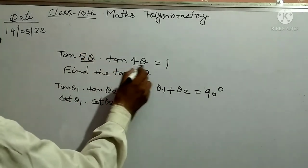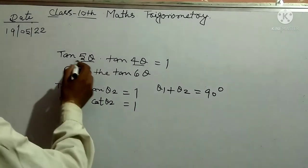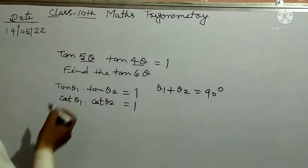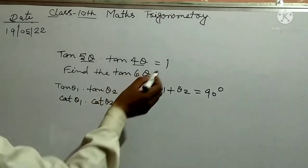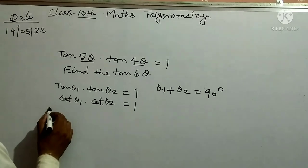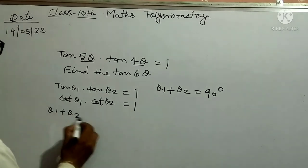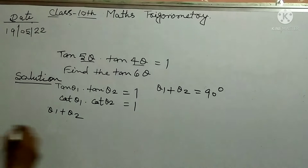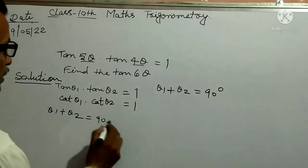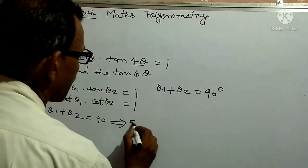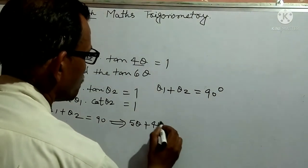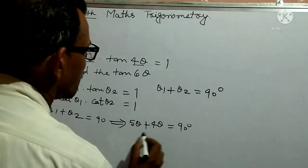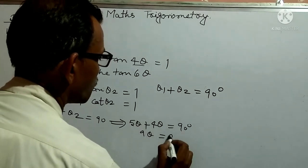So here, 5θ is θ₁ and 4θ is θ₂. Using this method to solve the question: θ₁ + θ₂ = 90 degrees, so 5θ + 4θ = 90 degrees, which gives 9θ = 90 degrees.